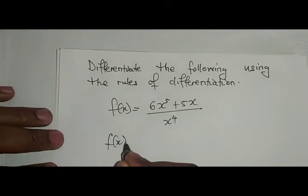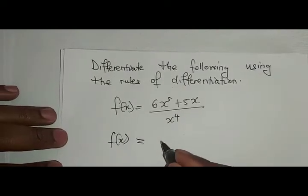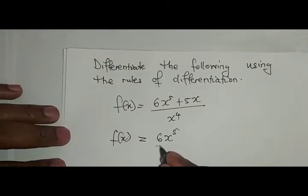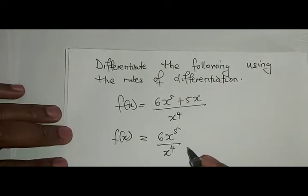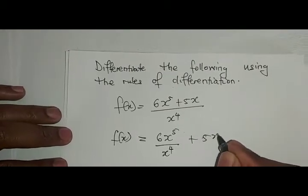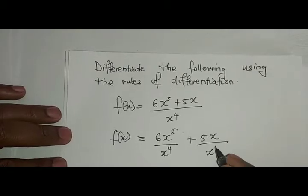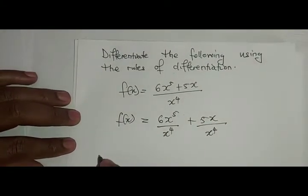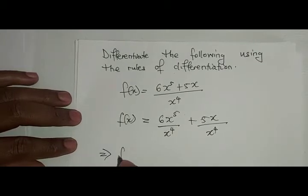That is to say it now implies that f of x equals, it will be 6x to the power 5 over x to the power 4, plus 5x over x to the power 4.